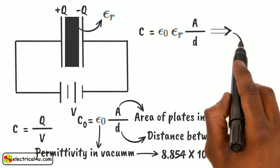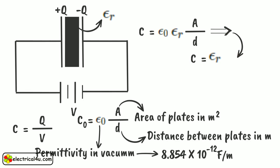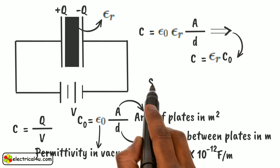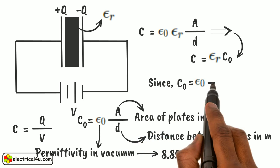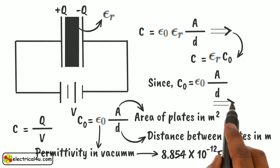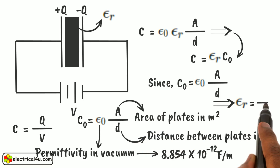From the expression of C, we get C equals epsilon_r into C_0. Since C_0 is epsilon_0 into A by D, this implies epsilon_r equals to C by C_0. So the value of epsilon_r, the relative dielectric constant of the material, can be determined by first measuring capacitance with vacuum as dielectric and then the material as dielectric.